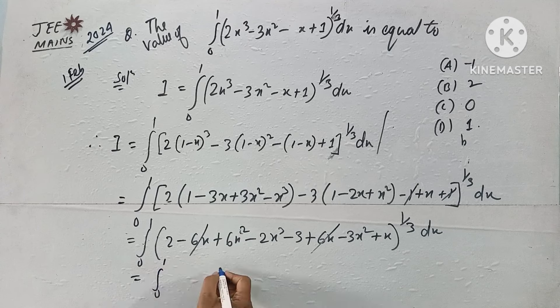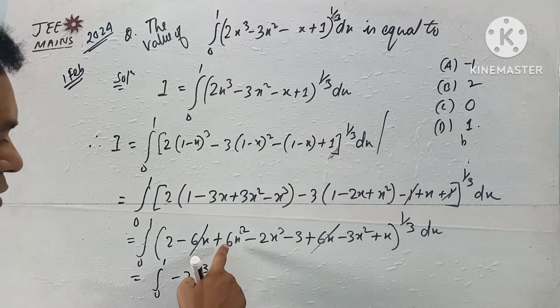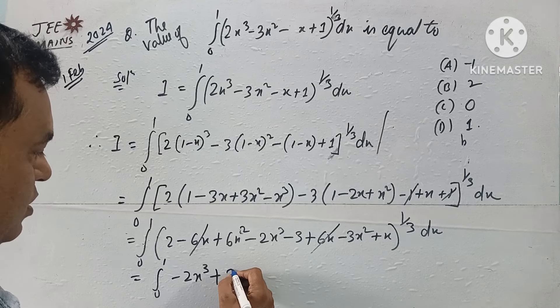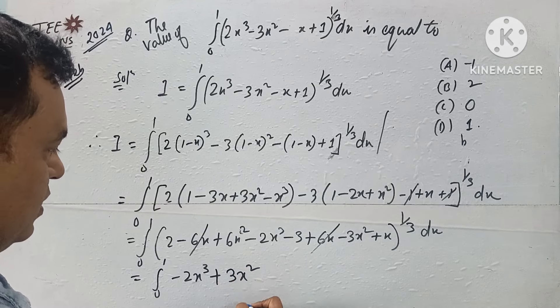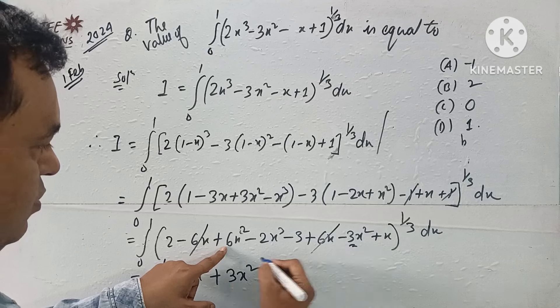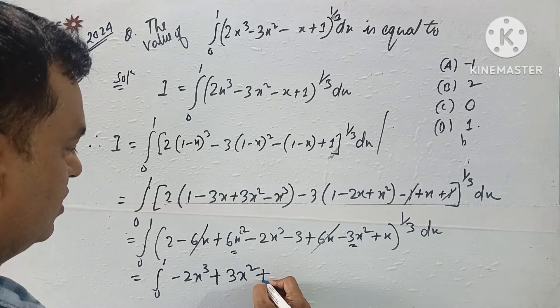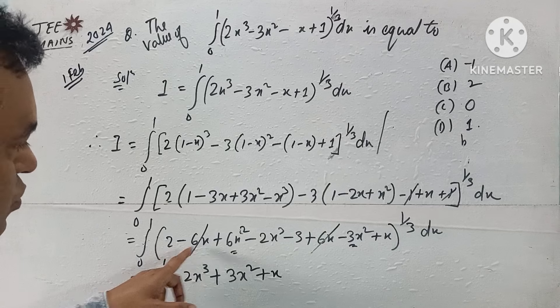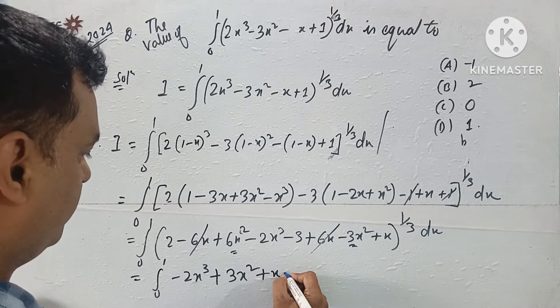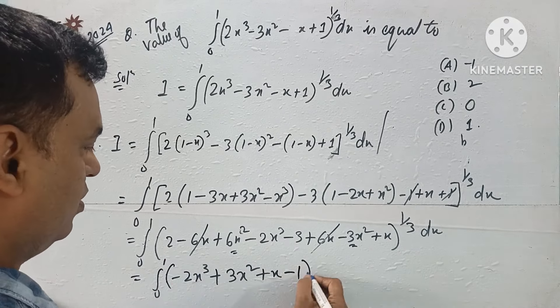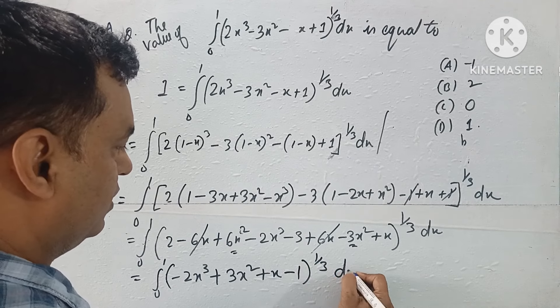This gives us integral from 0 to 1 of (-2x³ + 3x² + x - 1)^(1/3) dx.